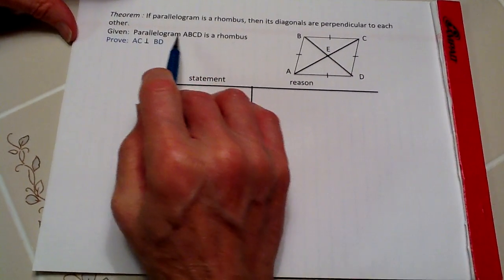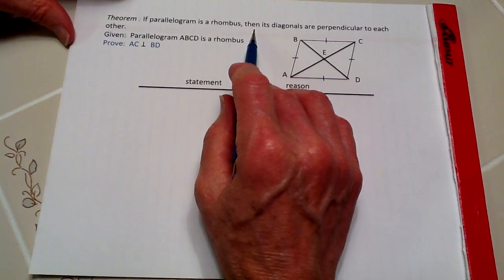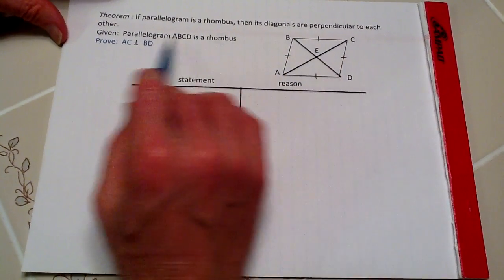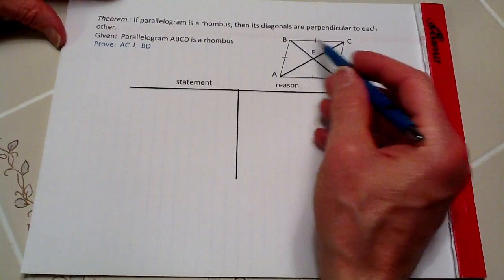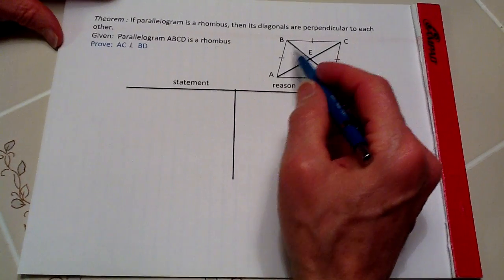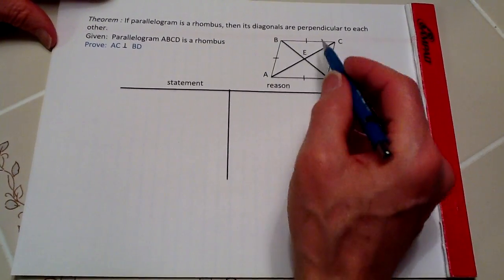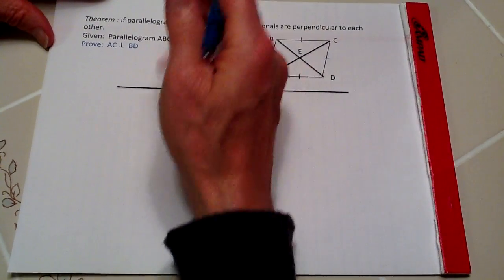We are going to prove that if a parallelogram is a rhombus, then its diagonals are perpendicular to each other. ABCD is our rhombus, and as I've already indicated, you can see that they're all congruent, which means all four sides are equal, which is what you normally have with a rhombus.